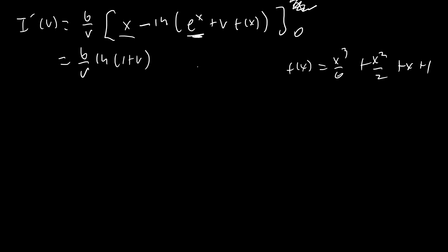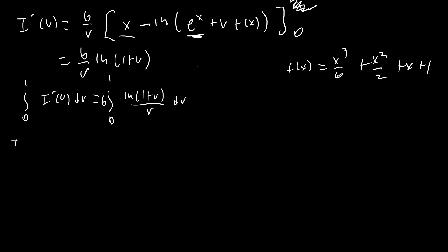Now we just have to solve for I(v). It's actually very difficult to solve for I(v) directly, so we're just going to set up a definite integral from 0 to 1 of I'(v) dv. Integrating from 0 to 1 gives us I(1) minus I(0). I(1) is our original integral I, and I(0) is just 0.